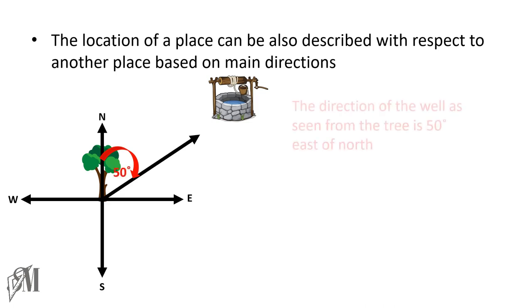So we write it as a sentence like this: the direction of the well as seen from the tree is 50 degrees east of north. And symbolically it can be represented as capital N, 50 degrees, E.